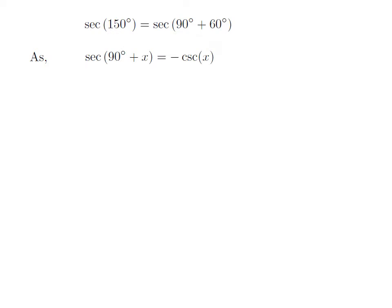As we know, the trigonometry identity secant of 90 degrees plus x is equal to minus cosecant of x.